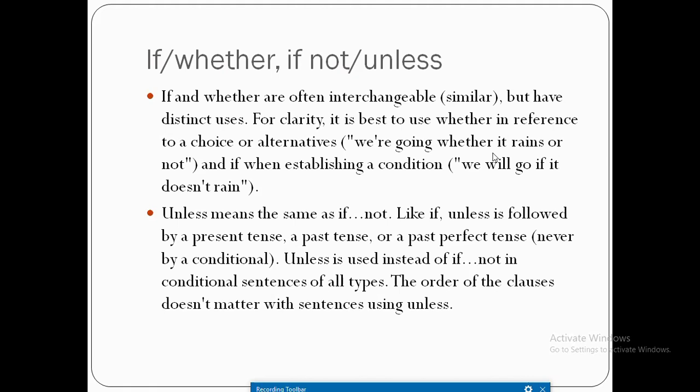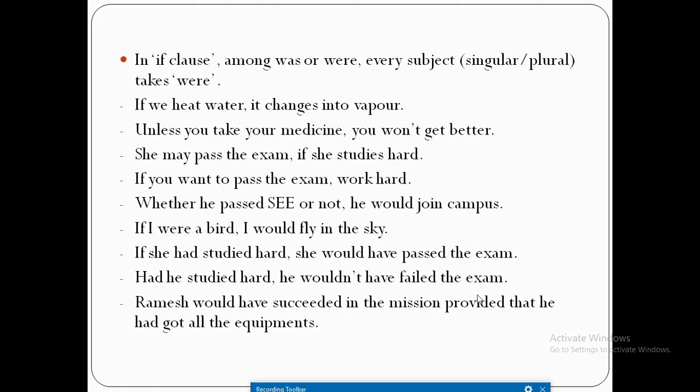'If not' and 'unless': 'unless' means the same as 'if not.' Like 'if', 'unless' is followed by a present tense, a past tense, or a past perfect tense — never by a conditional. 'Unless' is used instead of 'if not' in conditional sentences of all types: zero, type 1, type 2, and type 3. The order of the clauses doesn't matter with sentences using 'unless'. In the if-clause, among 'was' and 'were', every subject — singular or plural — takes 'were.'